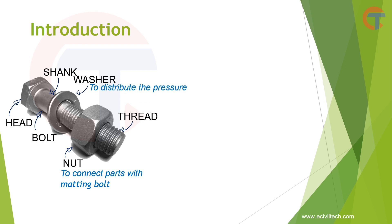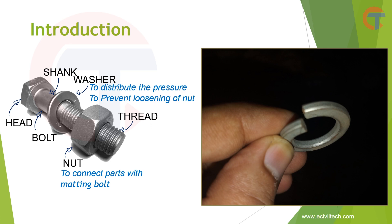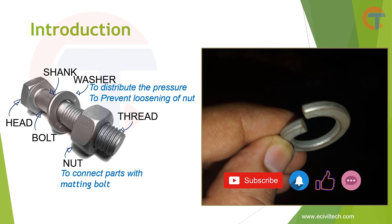This is a washer. The main function of the washer is to distribute the pressure. When we connect two parts using a nut and bolt, the nut and bolt exert pressure on the connecting parts, so washers are used to distribute this pressure. Another important function of the washer is to prevent the loosening of the nut. Special types of washers called spring washers are used for this. In structures that constantly vibrate — like transmission or telecommunication towers under wind — the nuts tend to loosen. Spring washers exert extra pressure on the nut to prevent this loosening.